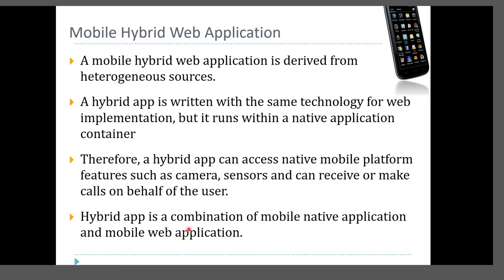Next, we look into mobile hybrid web applications. A hybrid web application is derived from heterogeneous sources — it is a mixed application. It is usually written with the same technology used for web implementation, but runs within a native application container. Therefore, a hybrid application can access native mobile features such as cameras and sensors, and can receive or make calls on behalf of the user, without sacrificing portability across different platforms.